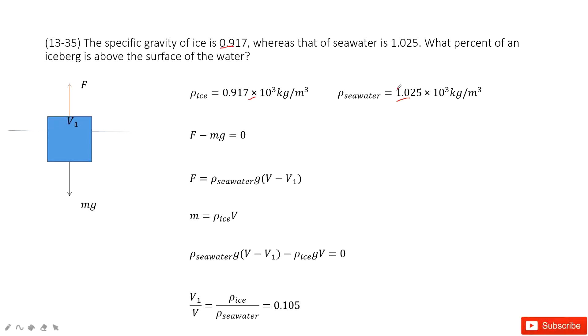If an iceberg is above the surface of the water, that means this iceberg is just floating along the water. When it floats, the force must be balanced - buoyancy equal to gravity. So buoyancy minus gravity equal to zero.